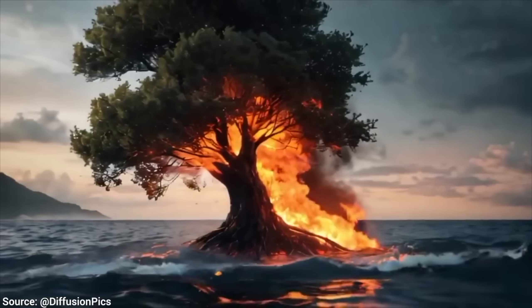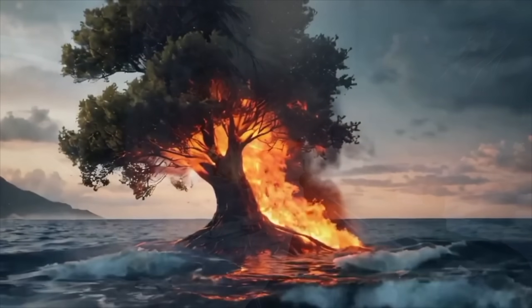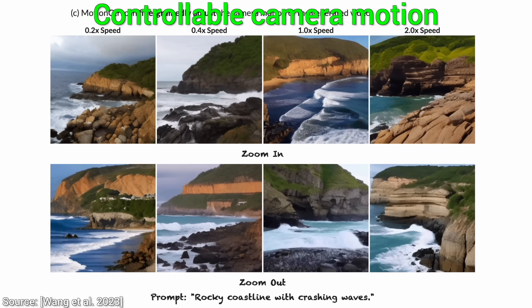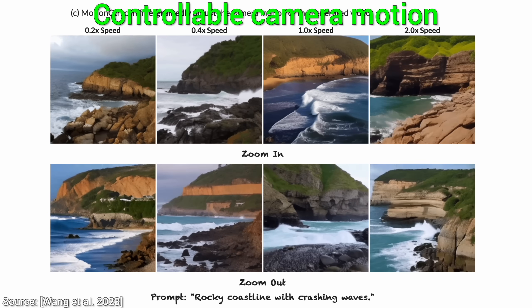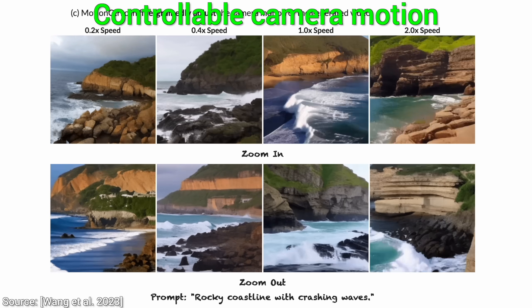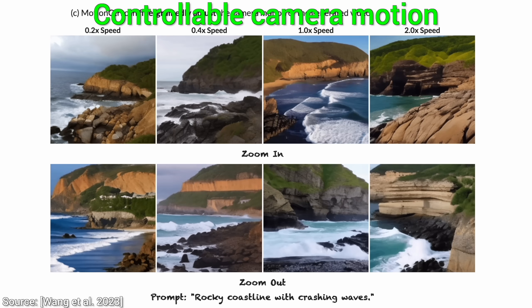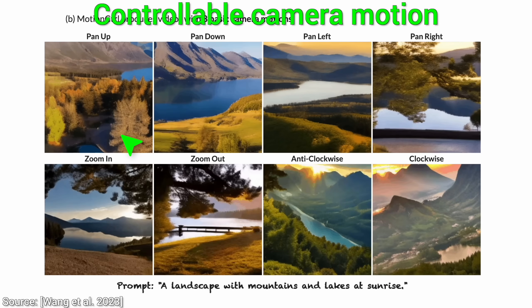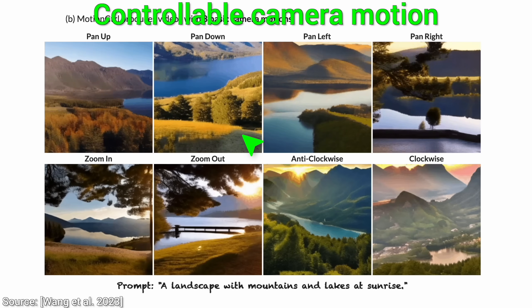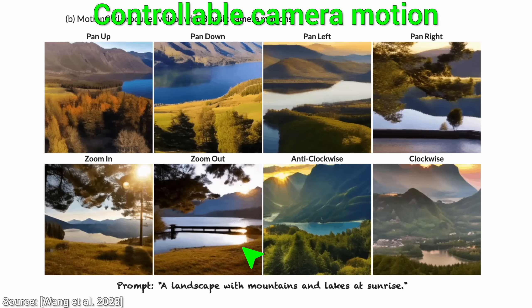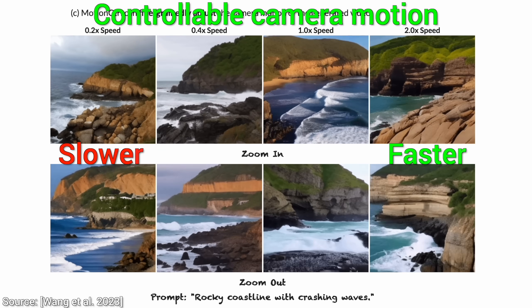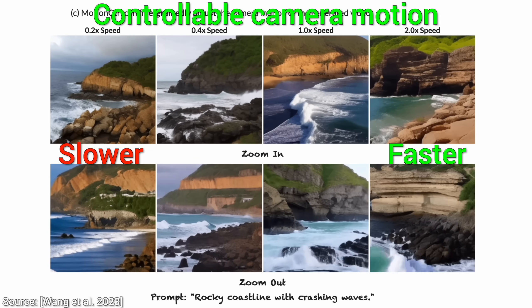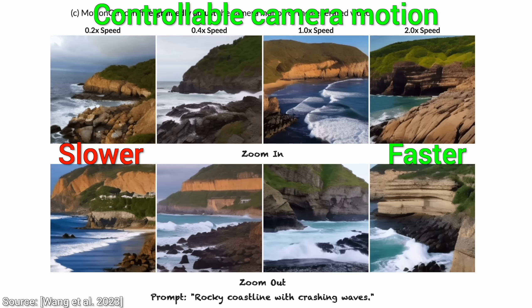But this is all old news, all in the past. And now, just a month later, look at this! Now we have customizable camera motion for these AI-generated videos. It can perform the usual bread-and-butter camera motions like pan up, pan down, zoom out, and it can even control the speed at which these movements take place. That is nice, but I have to say, I kind of expected that.